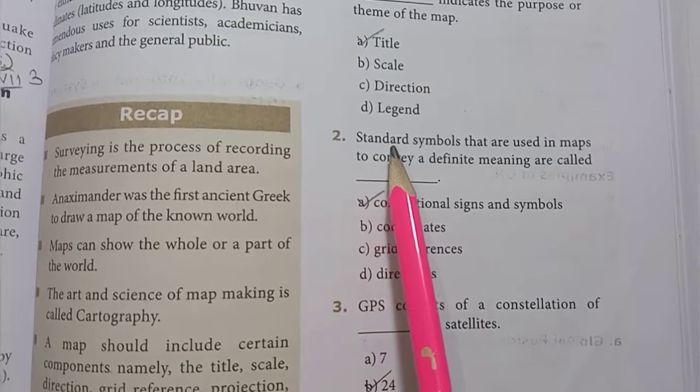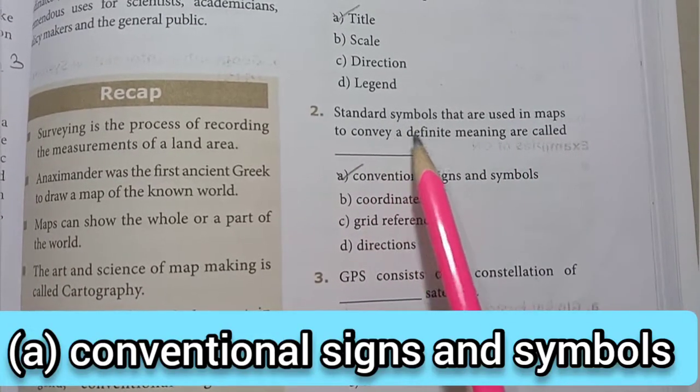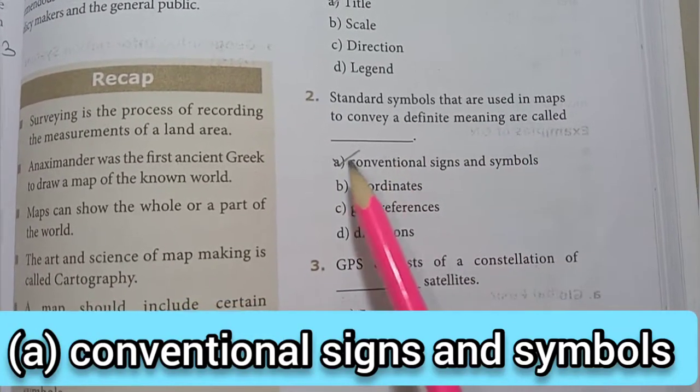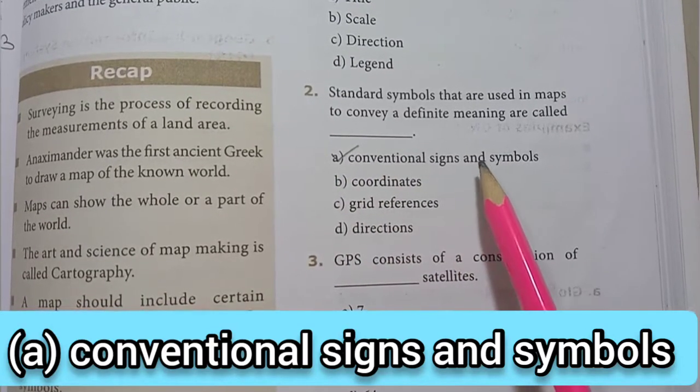Second, standard symbols that are used in maps to convey a definite meaning are called A option, conventional signs and symbols.